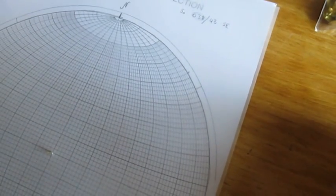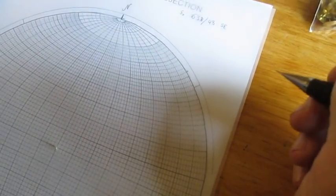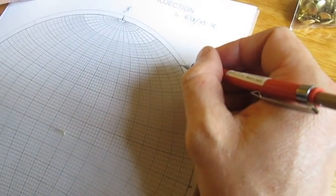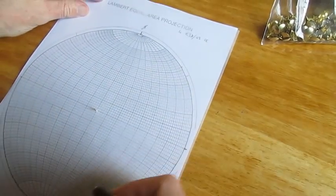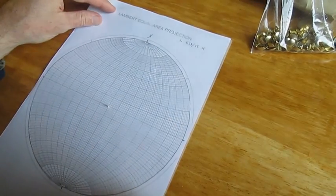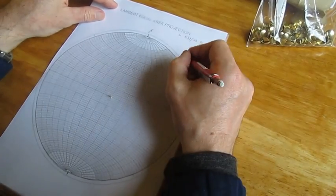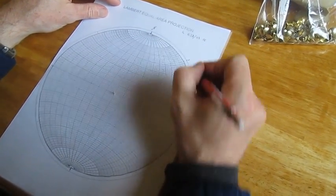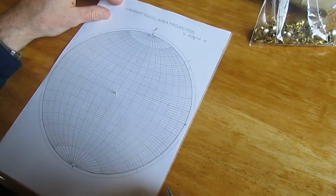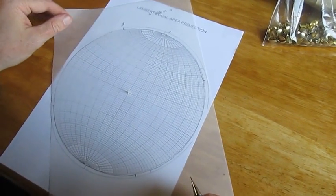So the next step is to bring the strike value up to north so that we can use the template beneath to plot our great circle. Just before we do that, I'm going to note down 038 just to keep myself right. Bring this up to north.